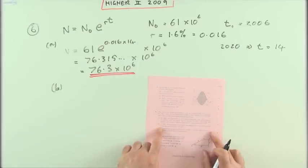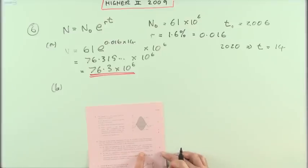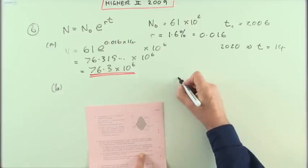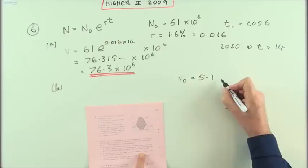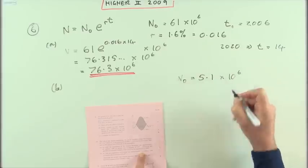Part B. In 2006, the population of Scotland was approximately 5.1 million. So here I've got another one. N0 is 5.1 million. I'll just put times 10 to the 6 for that.